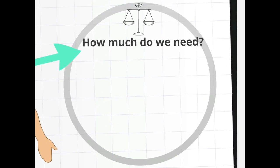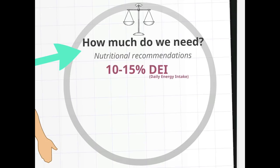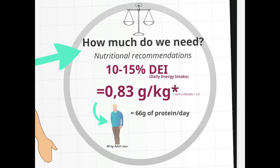How much do we need? Proteins should make up between 10 to 15% of our daily energy intake. Nutritional recommendations for the protein intake of adult men and women is 0.83 grams per kilogram for protein, with a protein digestibility corrected amino acid score value of 1, which is equivalent to 66 grams of protein per day for an adult man who weighs 80 kilograms.